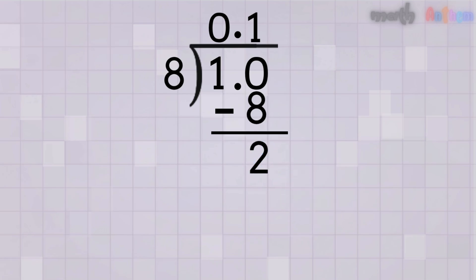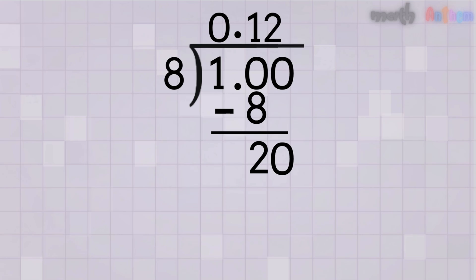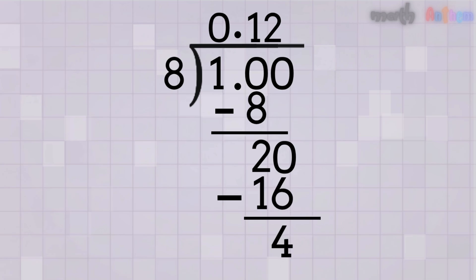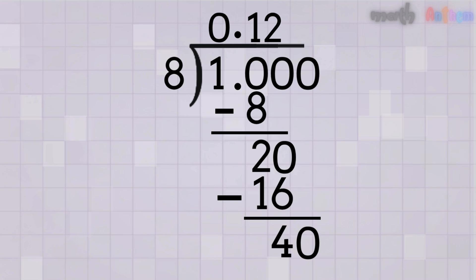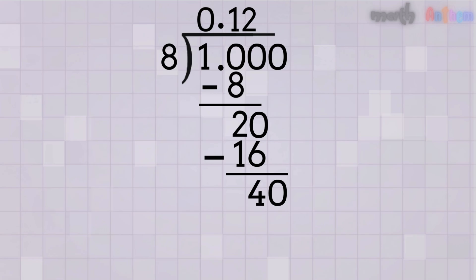To continue, we bring down another zero next to the 2, making the new number 20. How many times does 8 go into 20? The answer is 2 times. Write 2 in the quotient. Multiply: 8 times 2 equals 16. Subtract: 20 minus 16 equals 4 — still a remainder. Bring down another zero next to the 4, making 40. How many times does 8 go into 40? That's 5 times. Multiply: 8 times 5 equals 40. Subtract: 40 minus 40 equals 0 — no remainder, we're done. So 1-eighth as a decimal is 0.125.